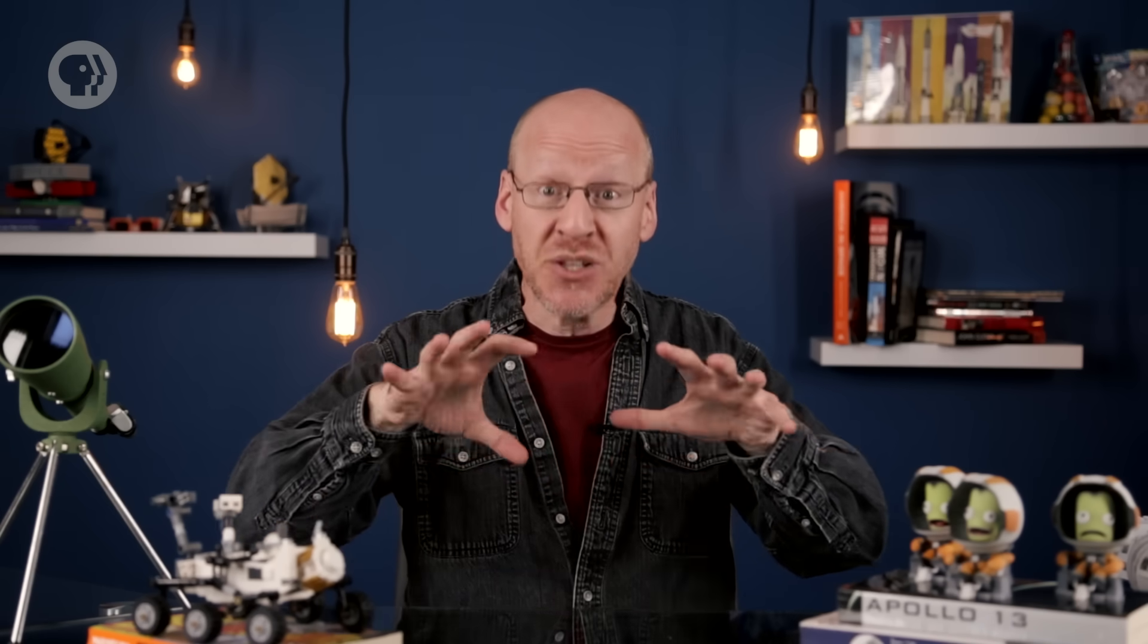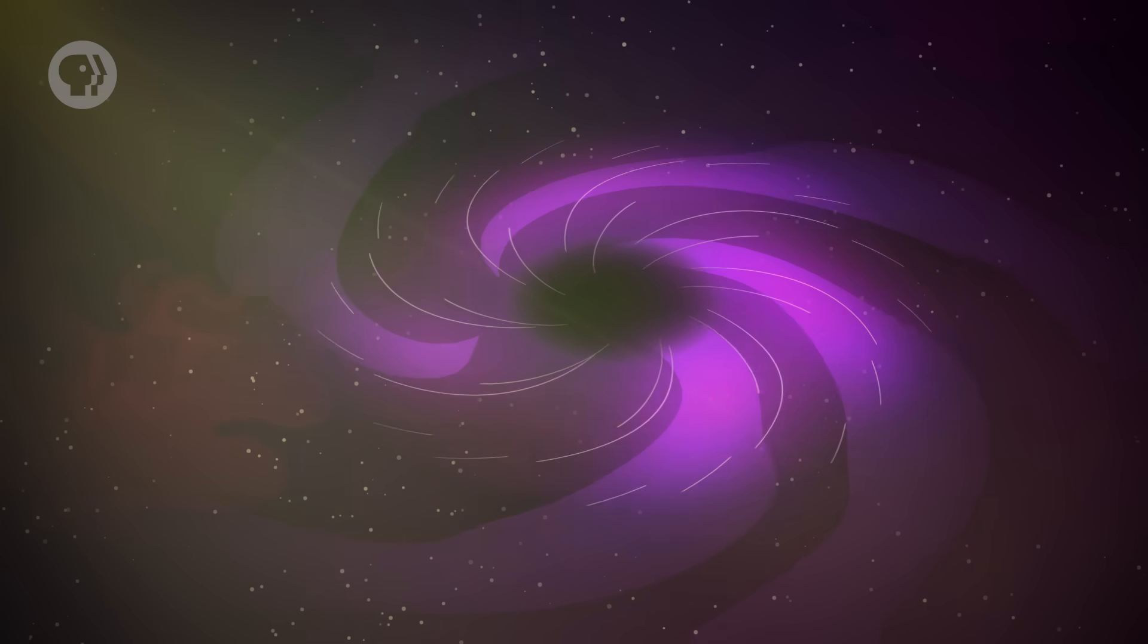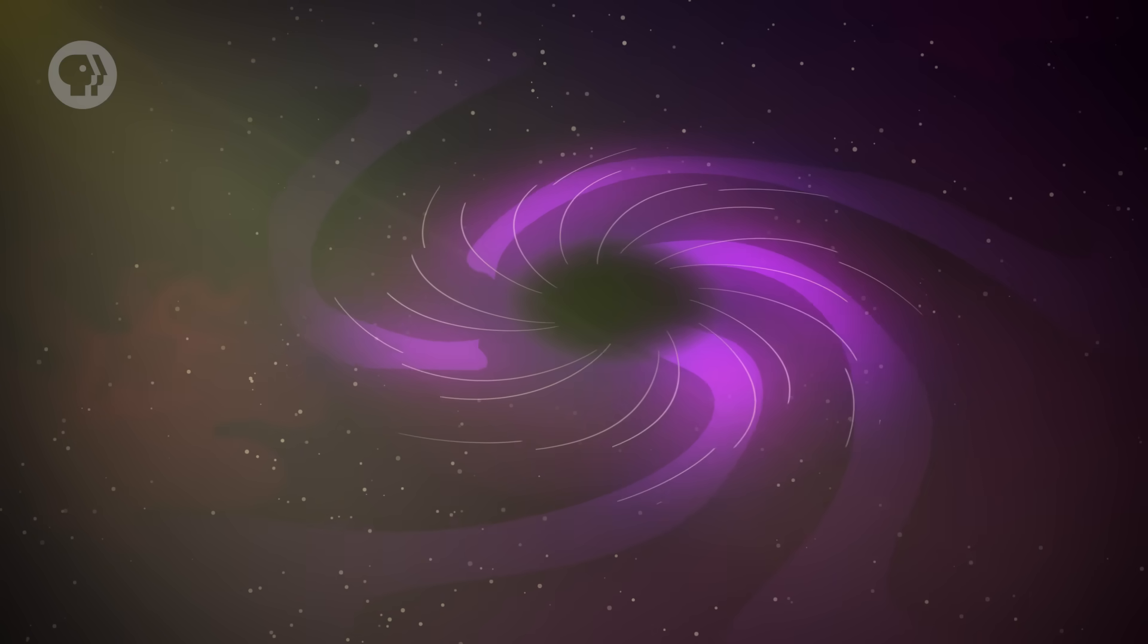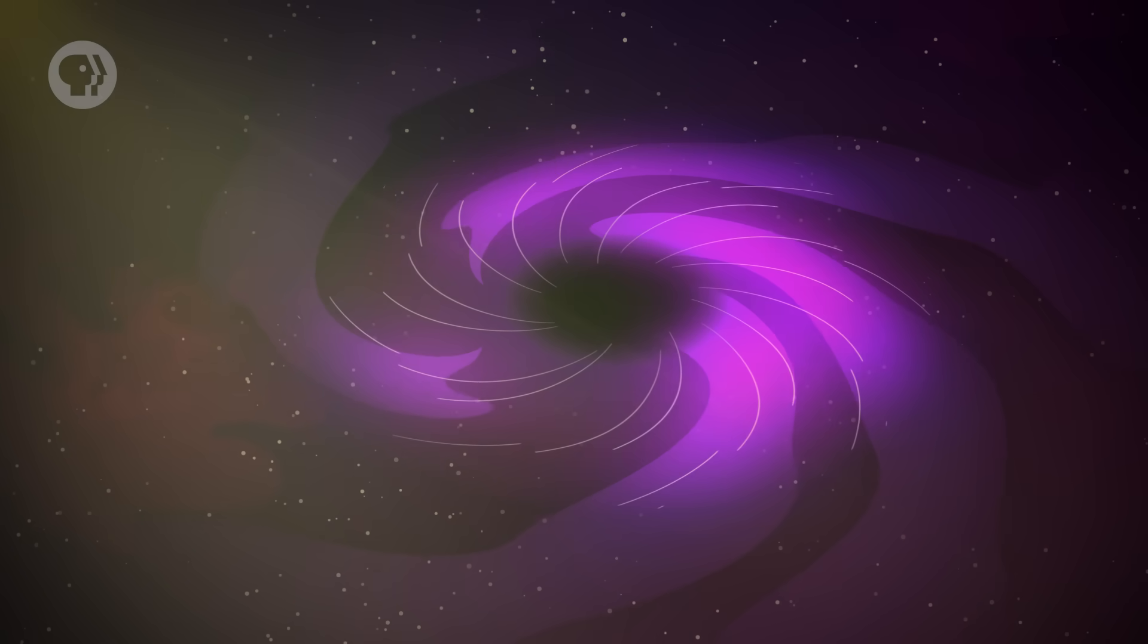But someone far away would see your clock ticking more slowly as you fell in. And this isn't a mechanical or perception effect. It's actually woven into the fabric of space. To someone outside looking down on you, your fall would literally take forever. But then, they wouldn't be able to actually see you. The light you emit would have to fight the intense gravity of the black hole to get out, and to do that it would lose energy.